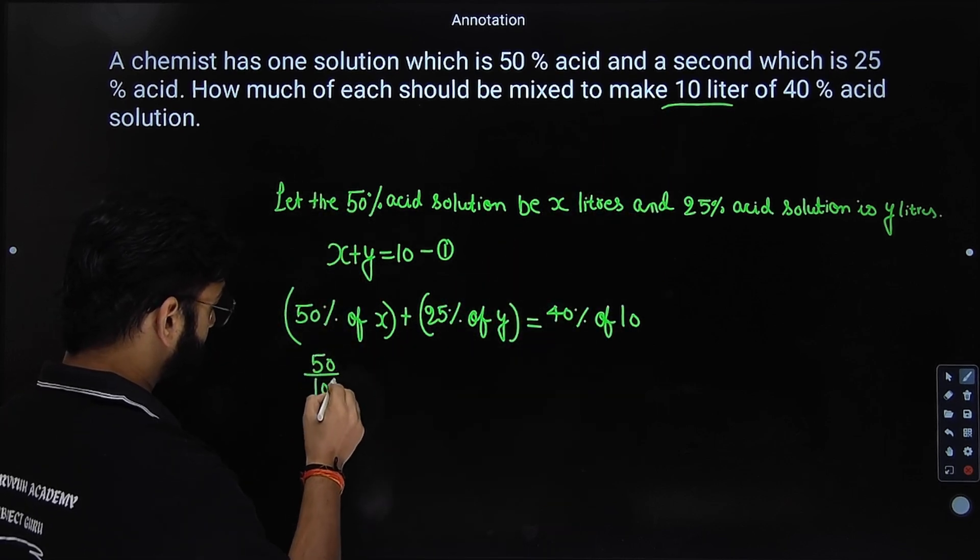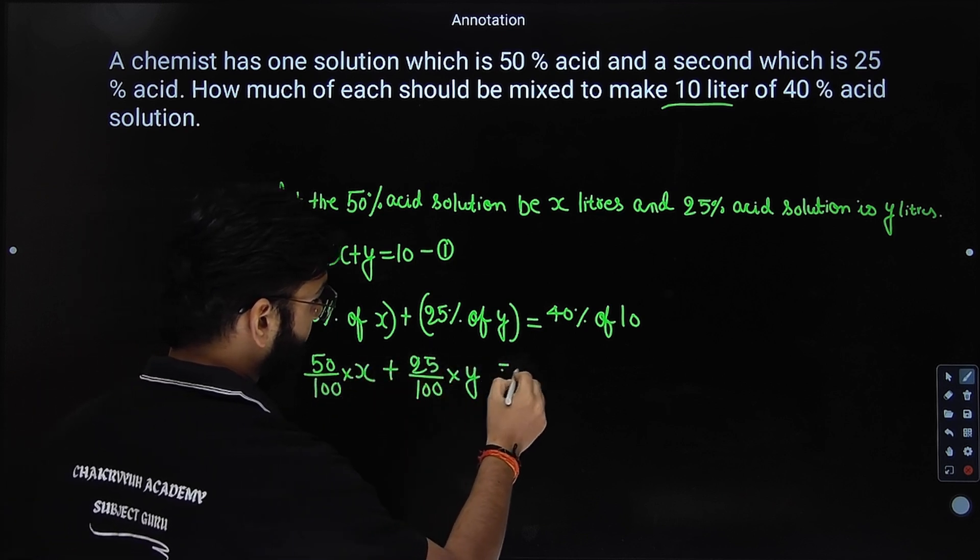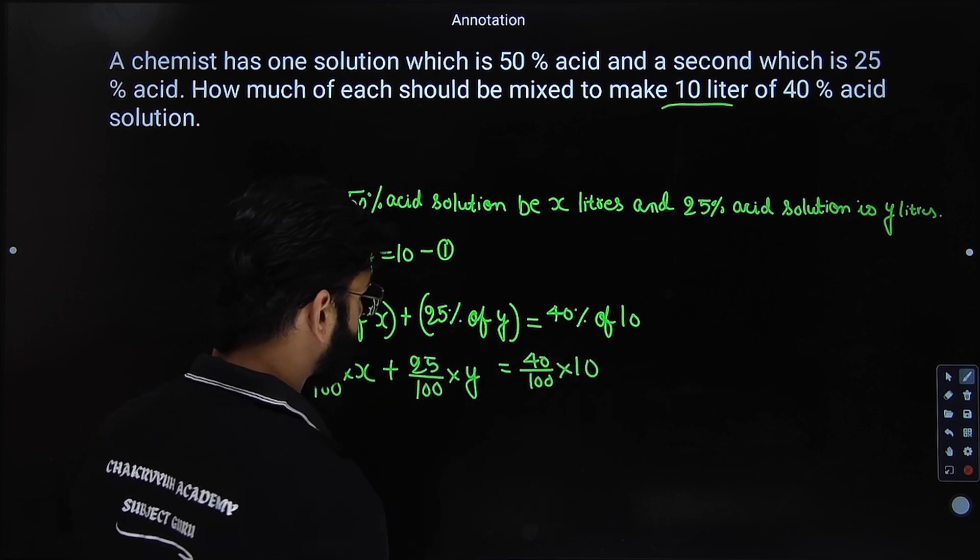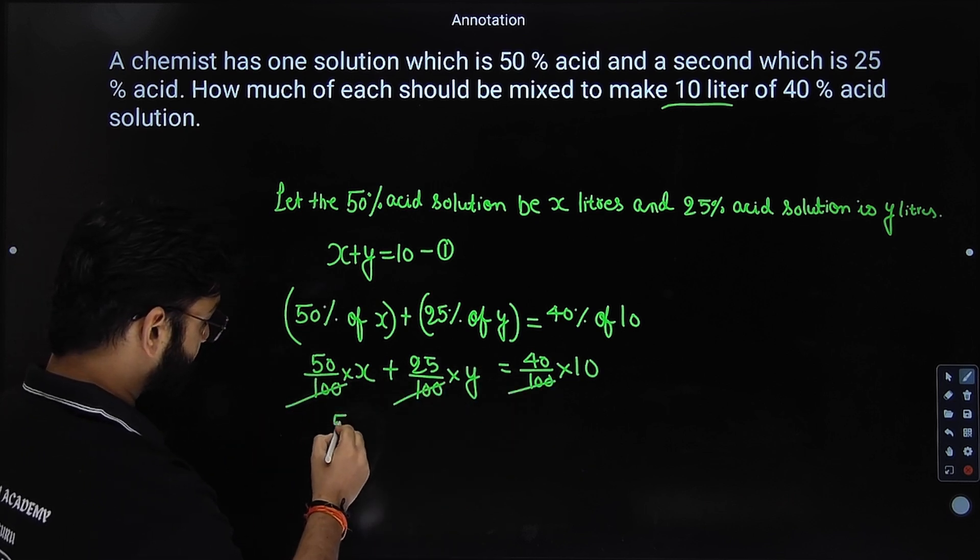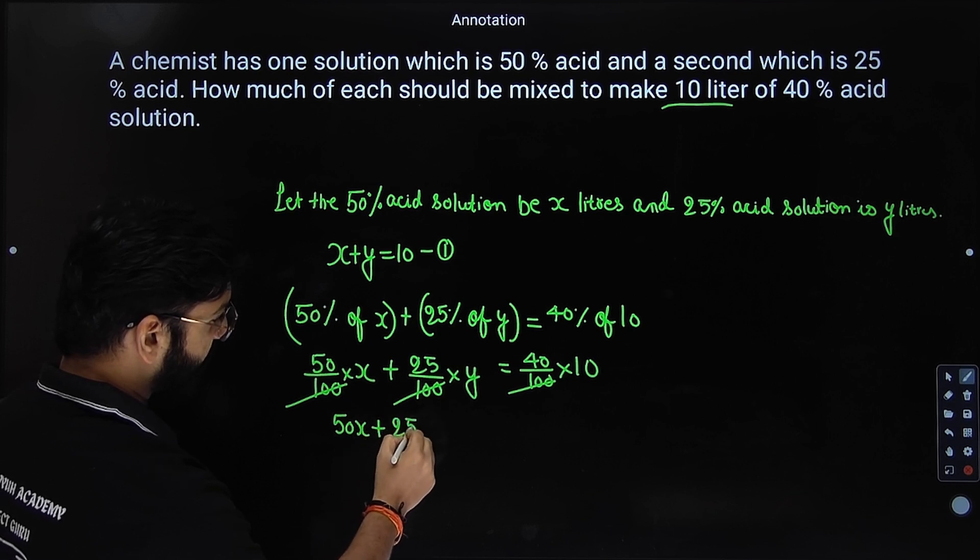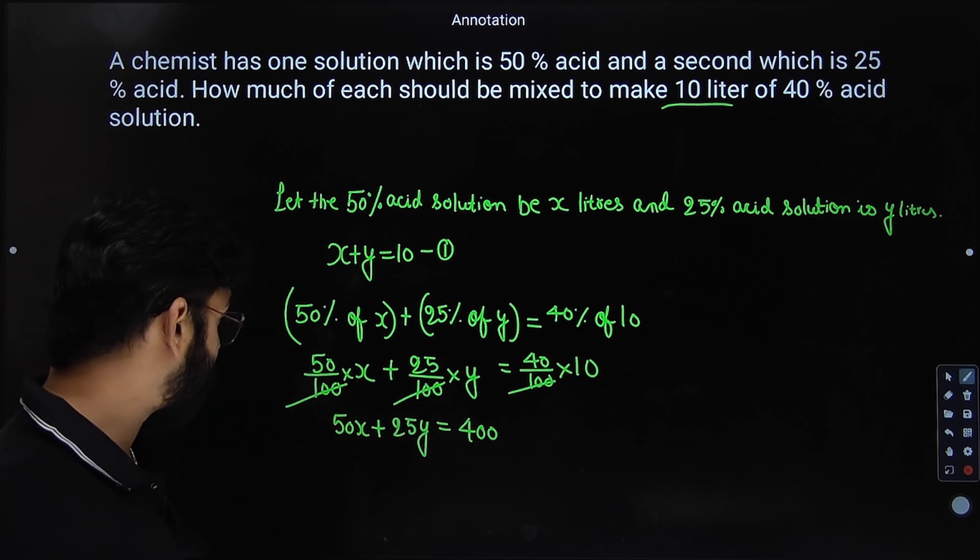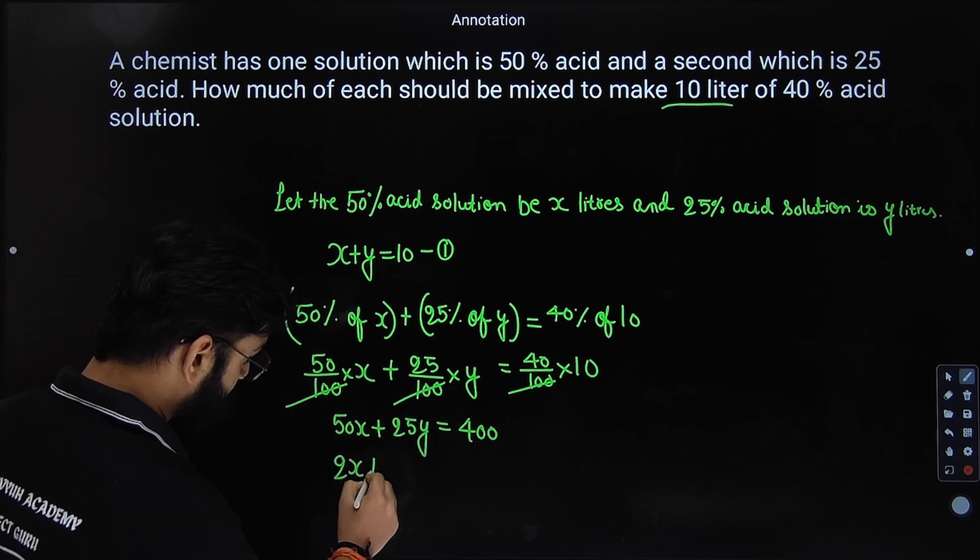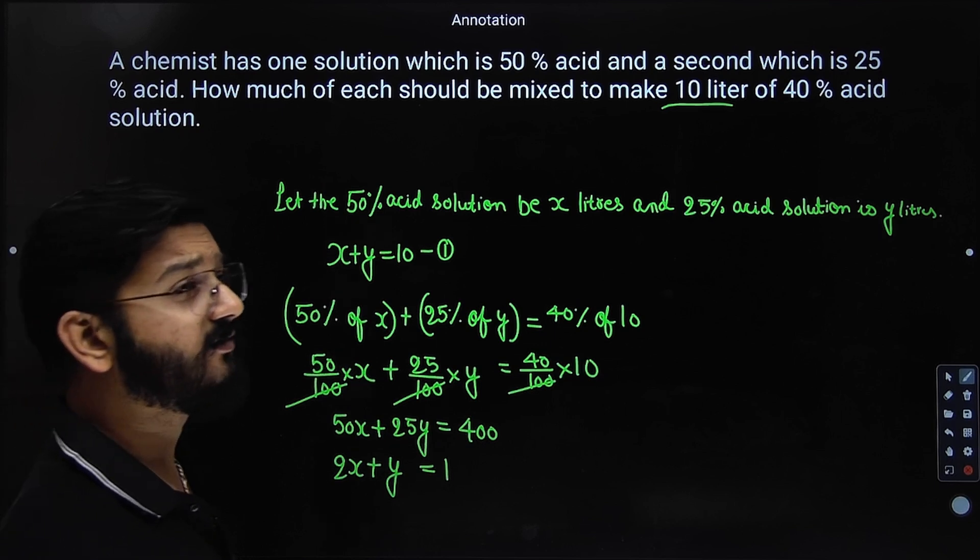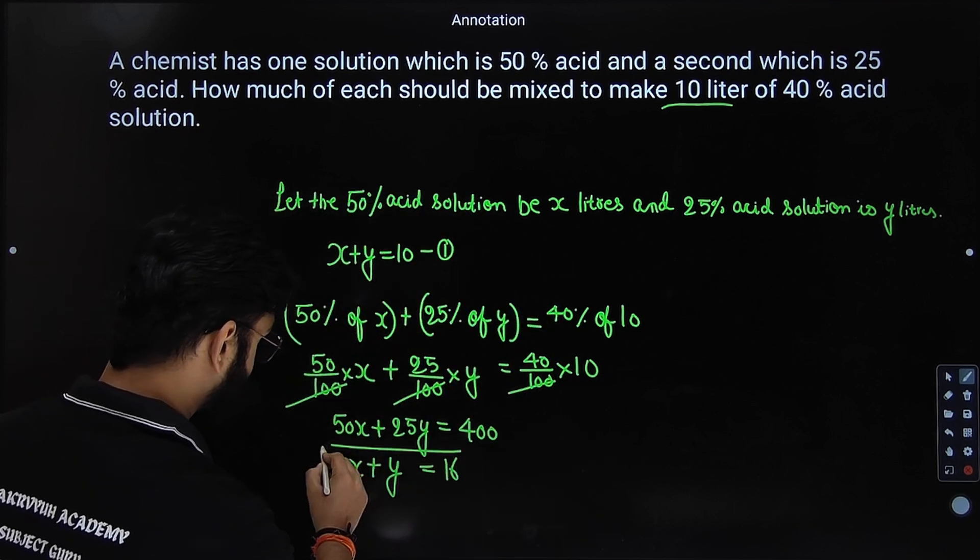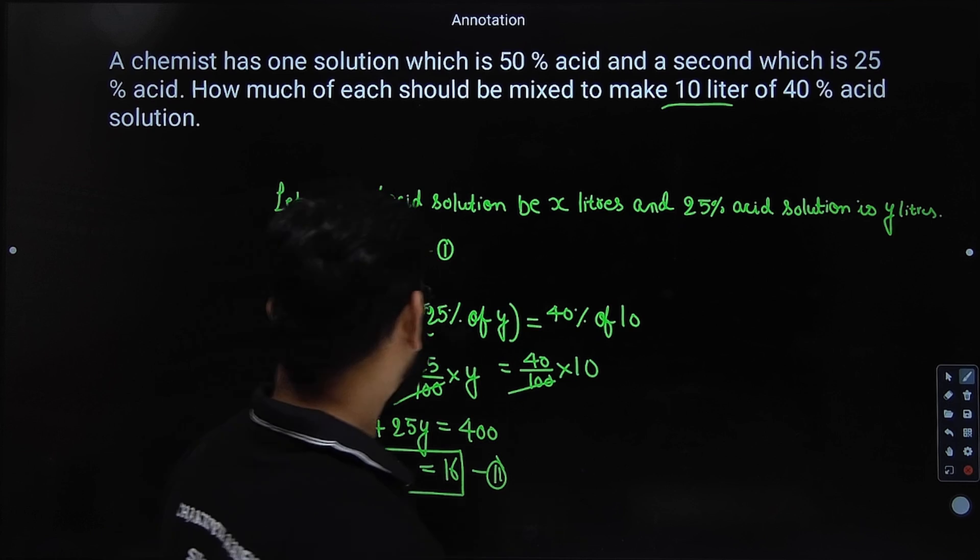So 50 by 100 of x plus 25 by 100 of y will be equal to 40 by 100 of 10. What can we cancel? You can see that I can take 1 by 100 common. So this is 50x plus 25y equals to 400. Now what can we take common from both the sides? We can take 25 common. Let us take 25 common. So this becomes 2x plus y equals to, 25 into 6 is 150. So 150 is 25 into 6. So 2x plus y equal to 16. That is the second equation. So students, note down both the equations quickly.